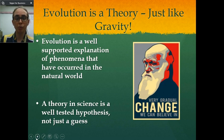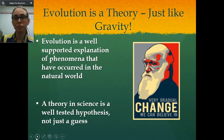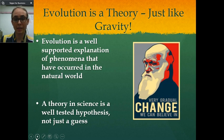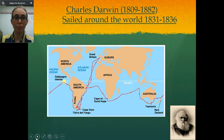When we talk about a theory in science, it is extremely well supported, and it is very difficult to become a scientific theory. Gravity is also a scientific theory. And Charles Darwin was the scientist that we credit with the formation of the theory of evolution.